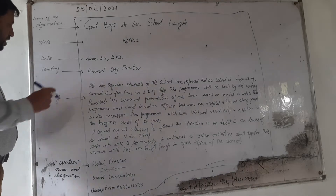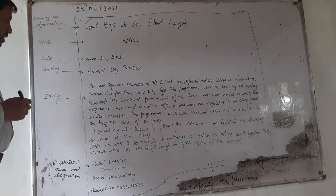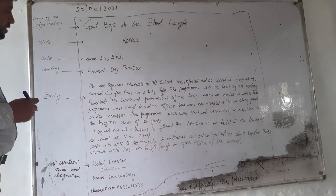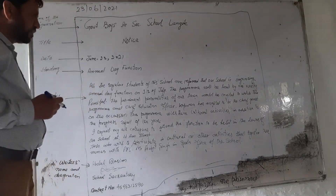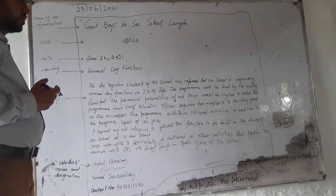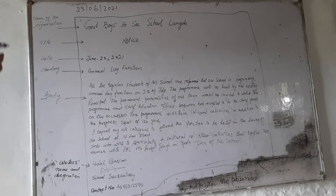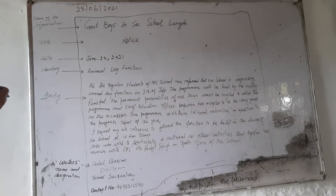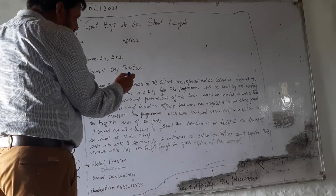Then comes the body. The body should answer certain questions to convey the full information of the notice: what is going to happen, what the event is about, when it is, where it is, and why it is. So these four or five questions should be answered in the body.